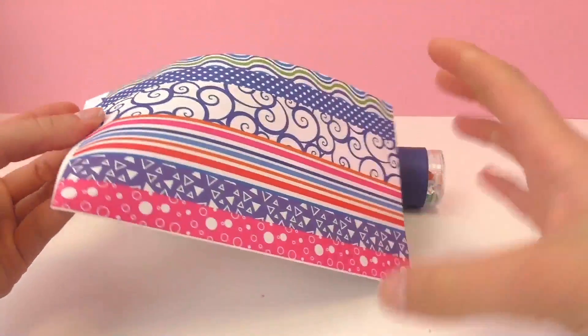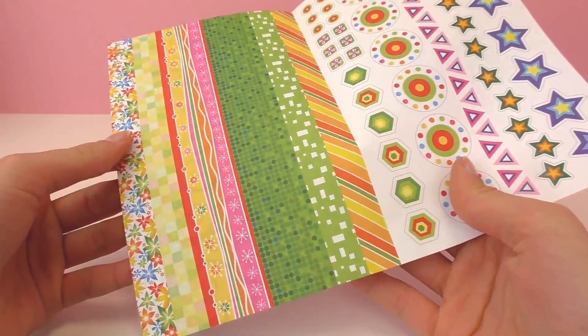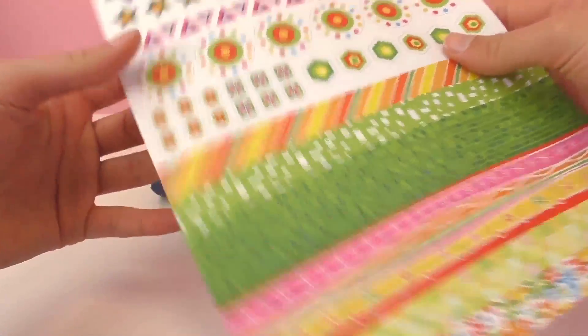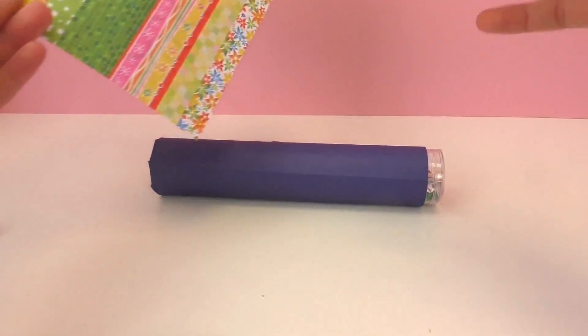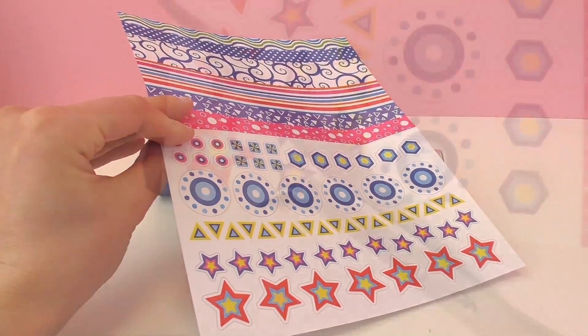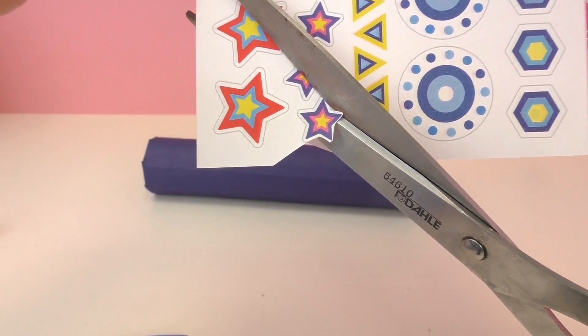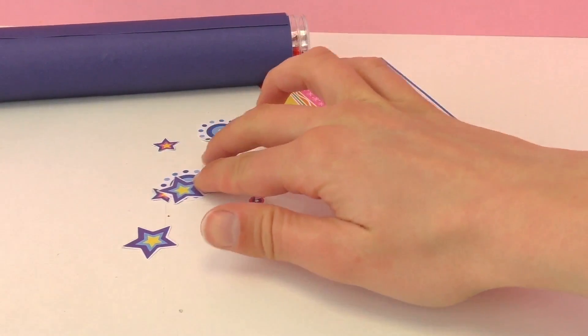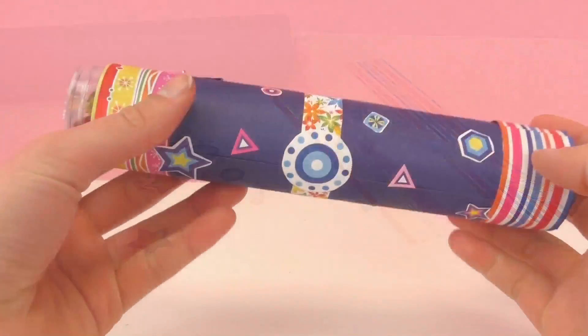Next I'm going to decorate it with some pretty shapes here. I'm just going to cut out a few things that I like and attach all of that. I've decided to cut out a few stars and other pretty shapes. So here I have everything cut out and I'm just going to decorate as I wish.